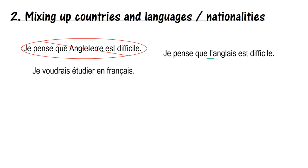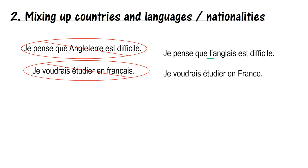This student wrote: 'je voudrais étudier en français' — excellent use of the conditional tense and an interesting verb, étudier. But they said 'I would like to study in French.' Unless they meant to study French — in which case remove the en — I'm pretty sure from context they wanted to say 'I would like to study in France.' So we say 'je voudrais étudier en France.'